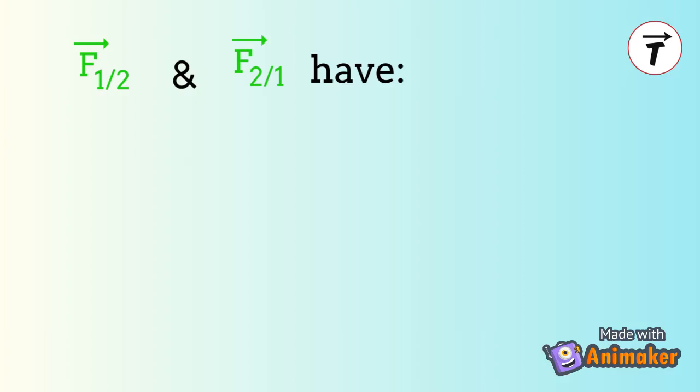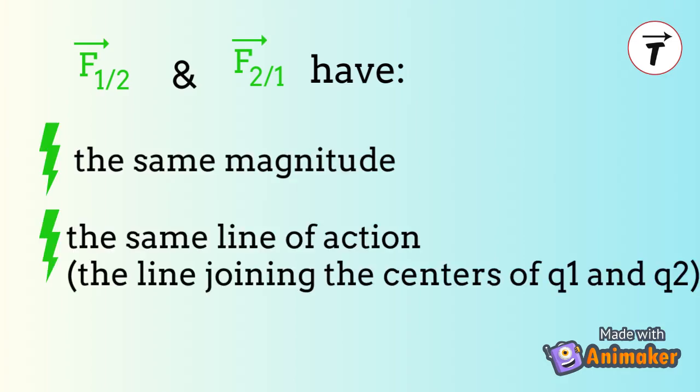The two interactions f1 on 2 and f2 on 1 have the same magnitude, the same line of action, which is the line joining the centers of q1 and q2, and opposite directions.